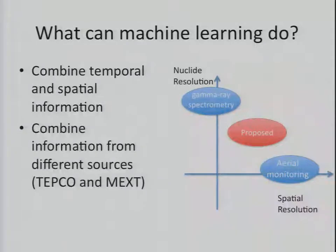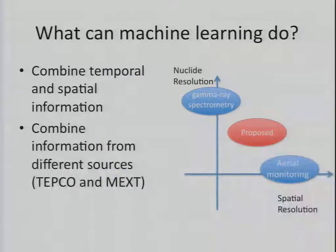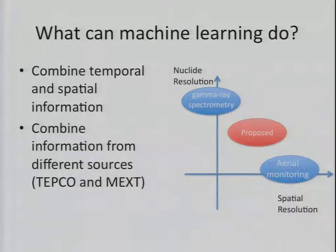So what we want to address in this paper is something in the middle: aerial monitoring gives good spatial resolution but you cannot distinguish different types of radionuclides at all, while gamma ray spectrometry gives poor spatial resolution but you can distinguish different types of nuclides. What we want to do is use machine learning to infer what type of radionuclides are in the data, to what extent, at which location, and also combine data sets coming from different sources, because in the beginning of the disaster different institutions started releasing data sets from measuring different places all over Japan.